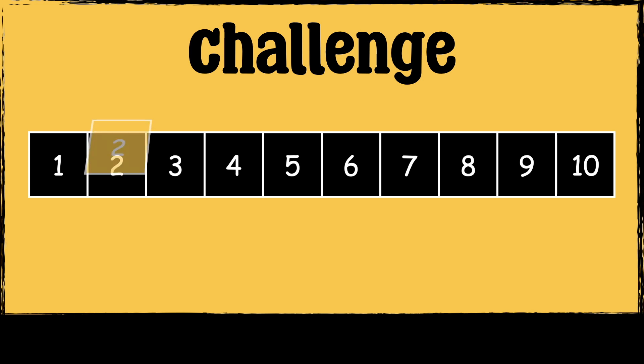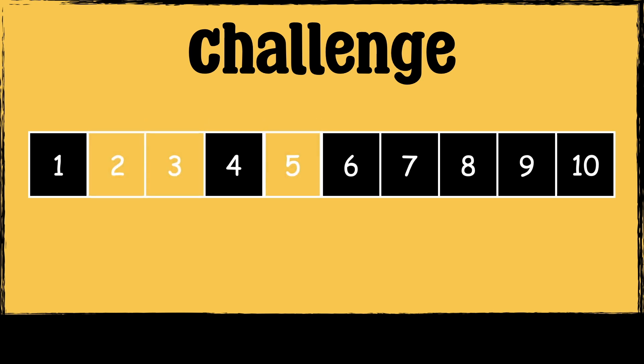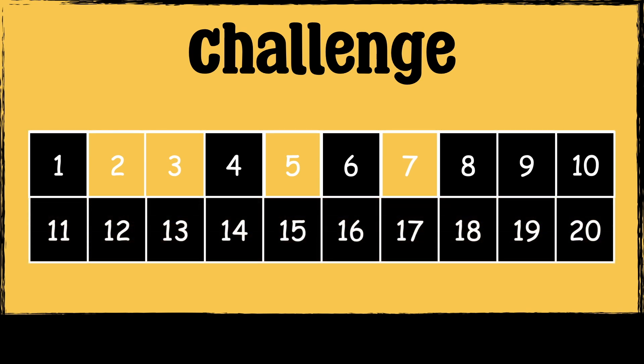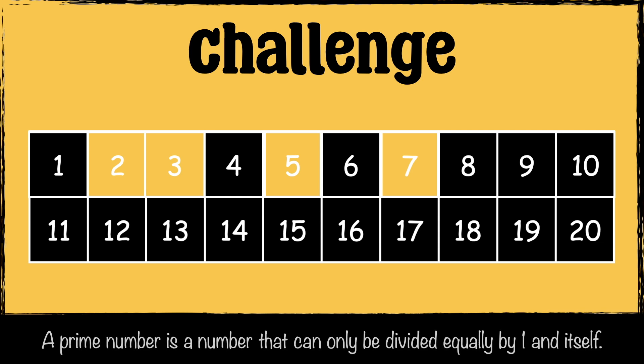So we now know that the prime numbers up to 10 are 2, 3, 5, and 7. Can you find out what the prime numbers are up to 20? Remember, a prime number is a number that can only be divided equally by 1 and itself. Let me know your answers in the comment section.